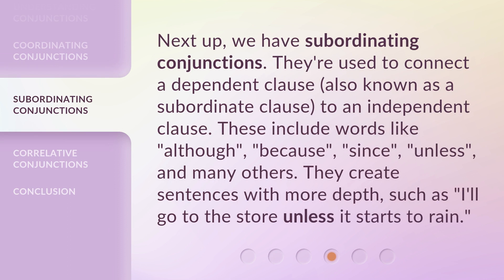Next up, we have subordinating conjunctions. They're used to connect a dependent clause, also known as a subordinate clause, to an independent clause. These include words like although, because, since, unless, and many others. They create sentences with more depth, such as: I'll go to the store unless it starts to rain.